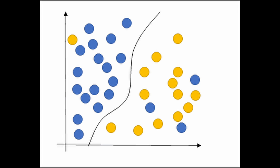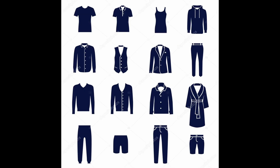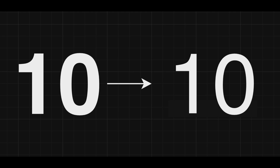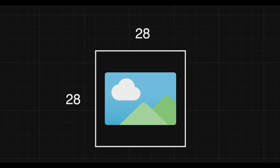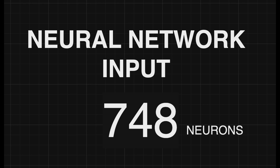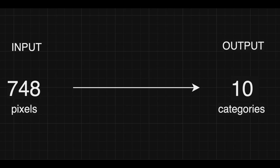Today's problem is a classification problem. We're going to have a dataset of images of different types of clothes, and the output of the neural network has to tell us which label or category the image belongs to. If we have 10 labels or 10 categories, our neural network is going to have 10 neuron outputs. The images are going to be 28 by 28 pixels, which means we're going to have 784 pixels — that's going to be the number of input neurons. So our neural network will have 784 neurons as input and 10 neurons as output for the labels.